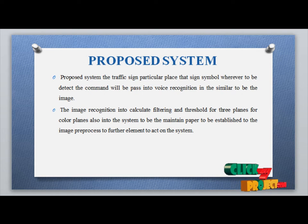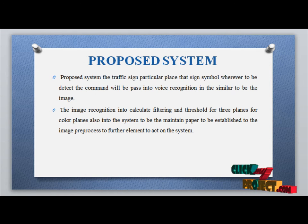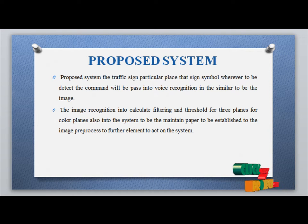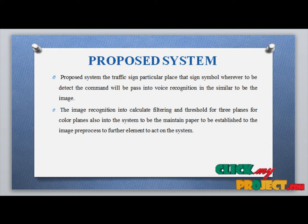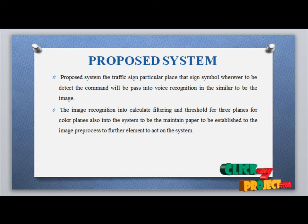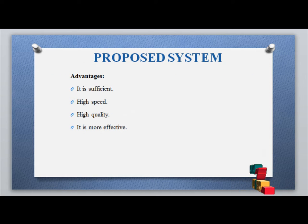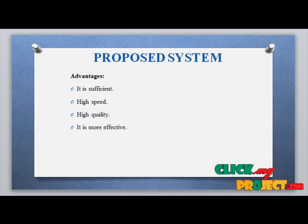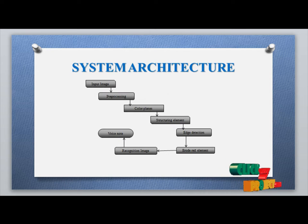In the proposed system, the traffic sign for a particular place is detected simply. Wherever a sign is detected, it will pass a voice recognition output similar to the image. The image recognition needs to calculate filtering and thresholding for three color planes. This system establishes image pre-processing as a key step. Some advantages of the proposed system are that it is sufficient, high speed, high quality, and more effective.